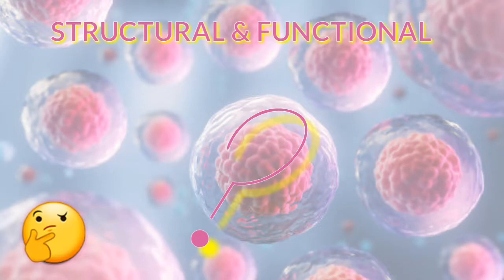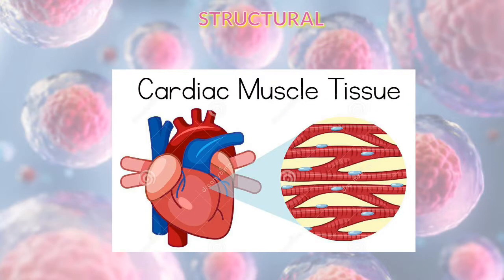Why do we use two terms — structural and functional? For structural, let me take the example of cardiac muscle cells. Cardiac muscle cells develop to form tissue, and from tissue they develop to form a whole organ. So we can say that the cell contributes to building a whole organ, giving a whole structure — that is why we call the cell the basic structural unit.